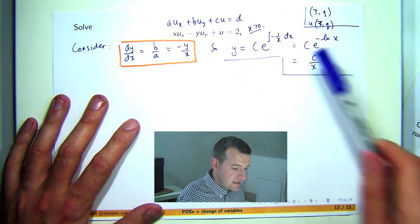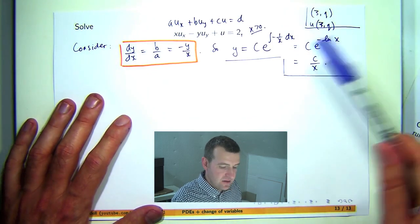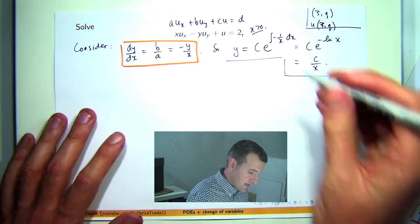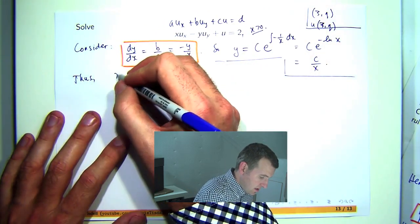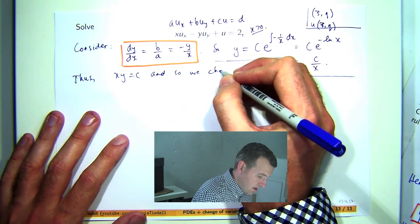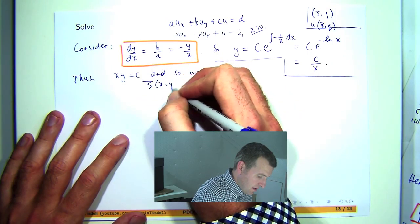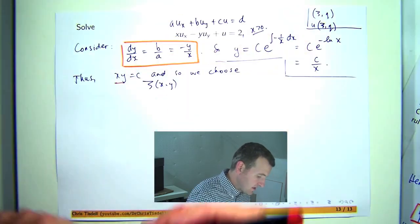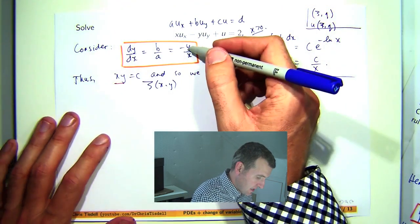Now if I rearrange this and put it in its implicit form then that's how we can choose one of these variables. Now it doesn't matter which one you choose here. I'm going to choose psi to be connected with this. So I'm going to choose psi to be the left hand side of this implicit solution to this original dy/dx equals negative y on x.